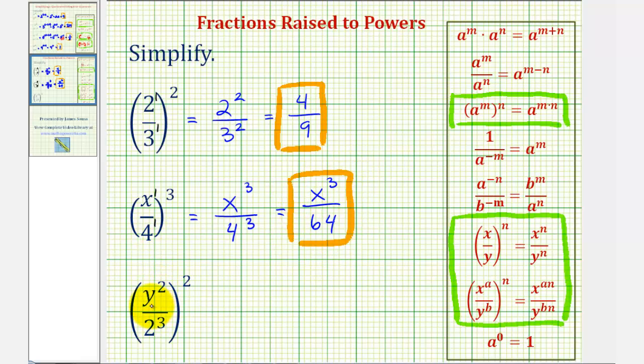Now for our last example, we have y to the second divided by two to the third, all raised to the second power. And because we have powers of powers, we will multiply the exponents. This would be y to the power of two times two, that's four, divided by two to the power of three times two, that's six.